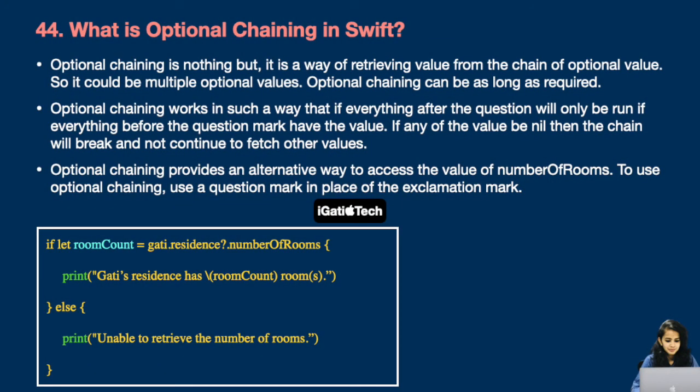Next question: what is optional chaining in Swift? Optional chaining is a way of retrieving values from a chain of optional values — it can be multiple optional values and can be as long as required. Optional chaining works so that everything after the question mark will only run if everything before the question mark has a value. If any value is nil, the chain will break and not continue. To use optional chaining, use a question mark in place of the exclamation mark. Check the example shown here.